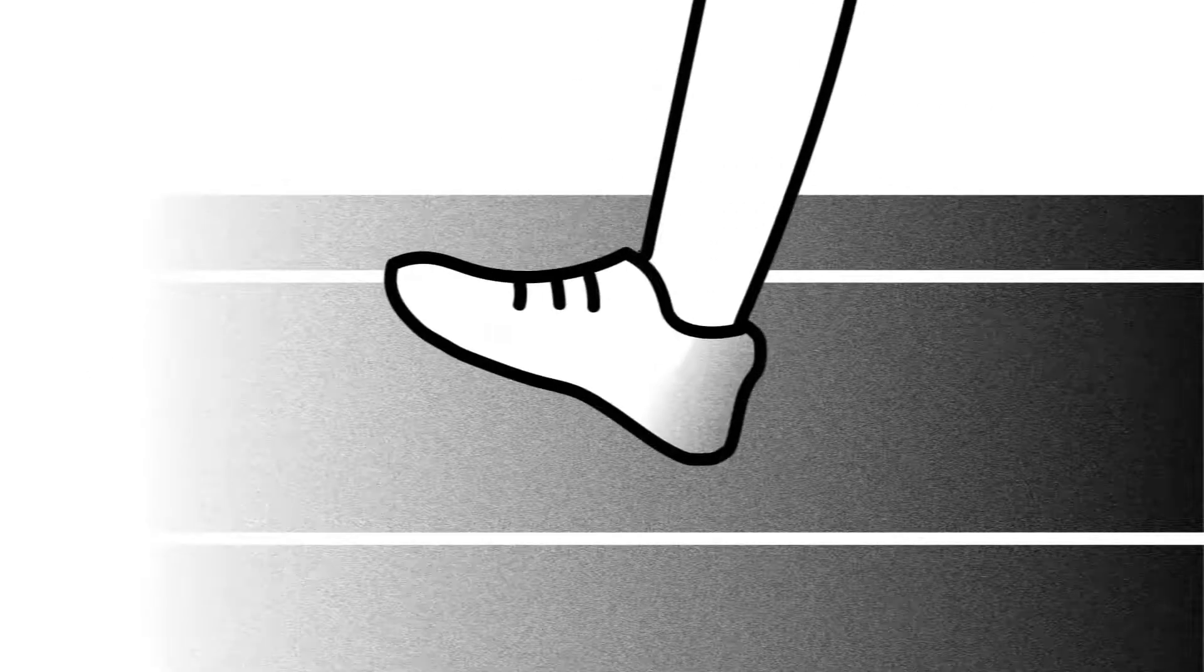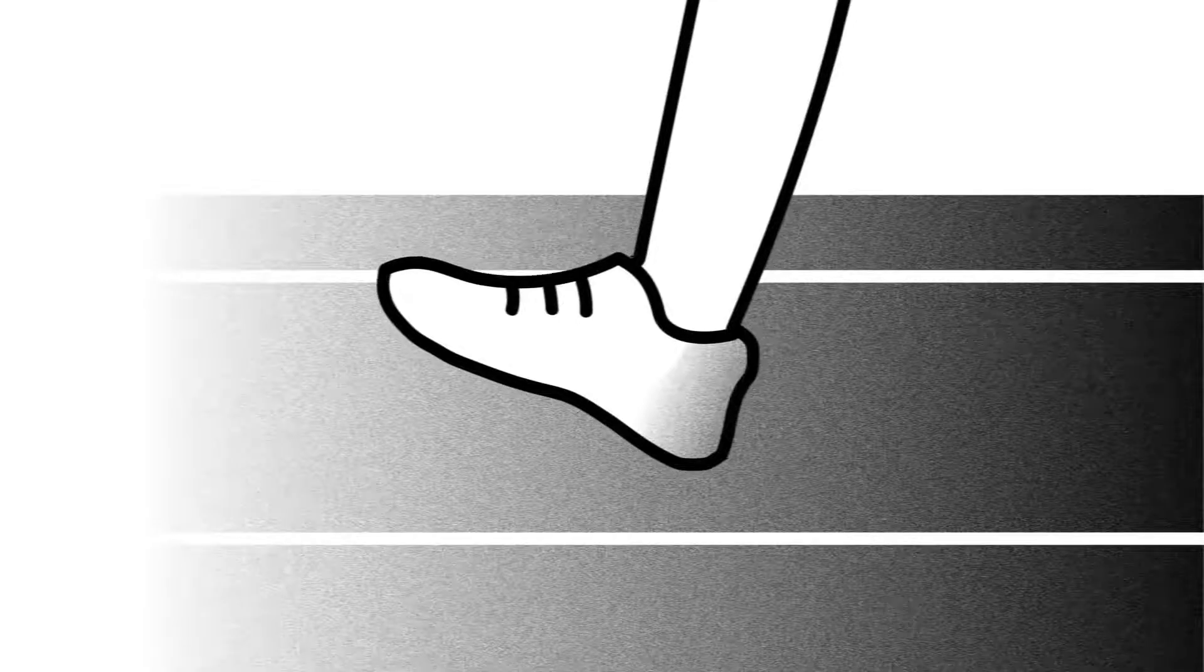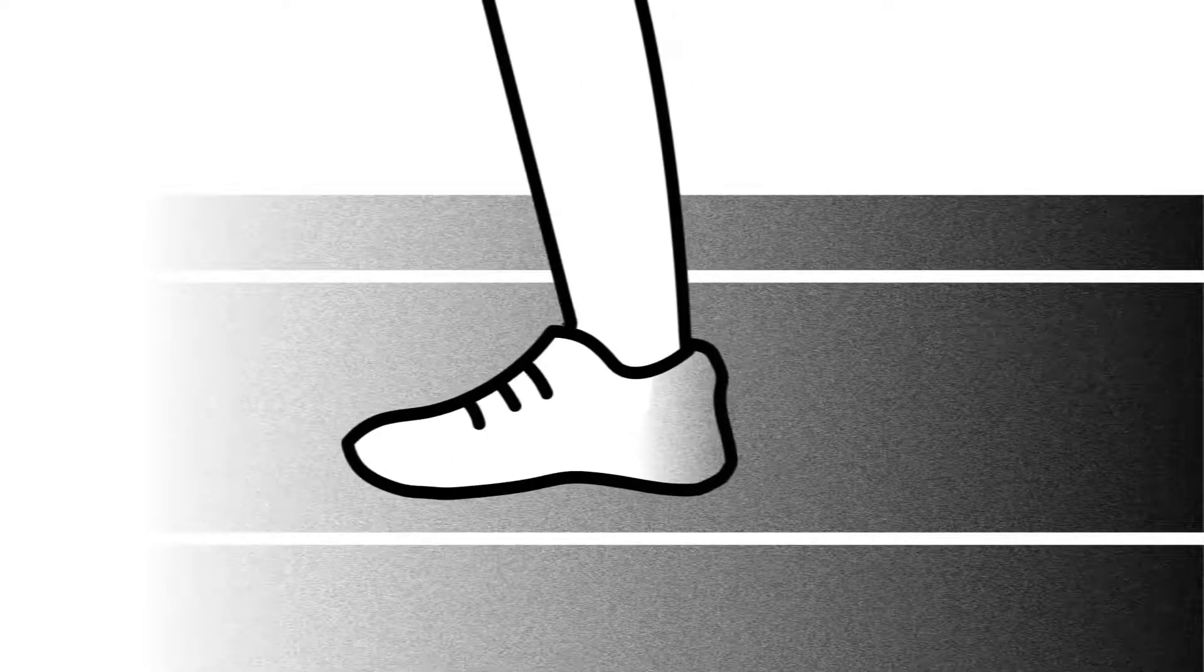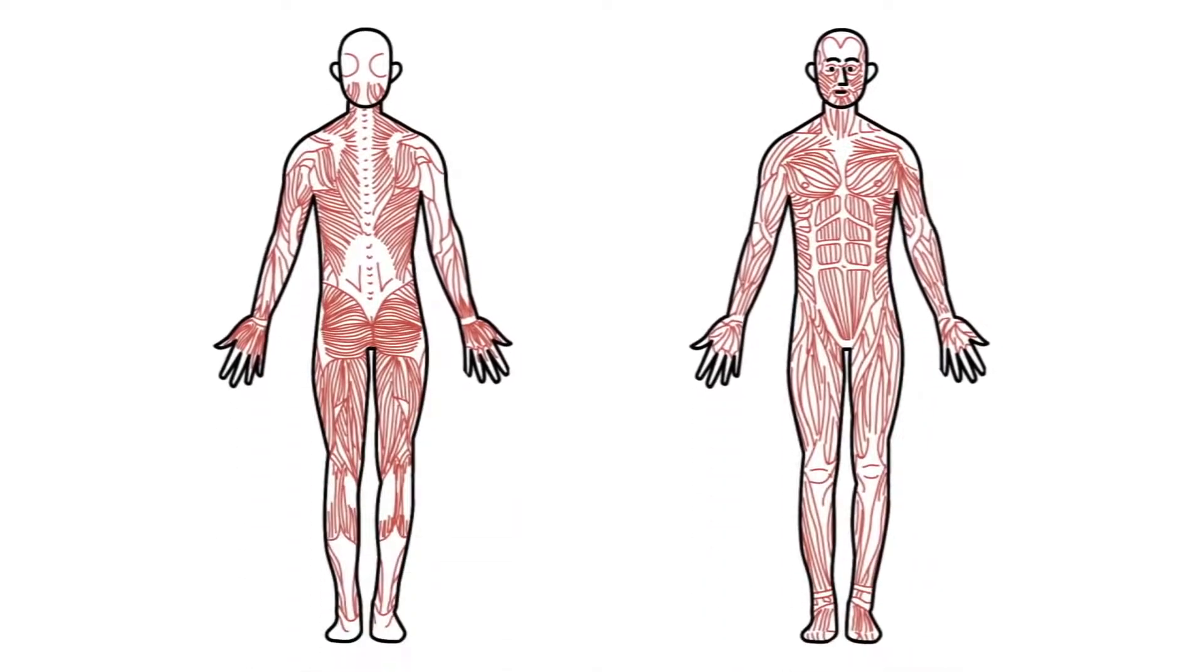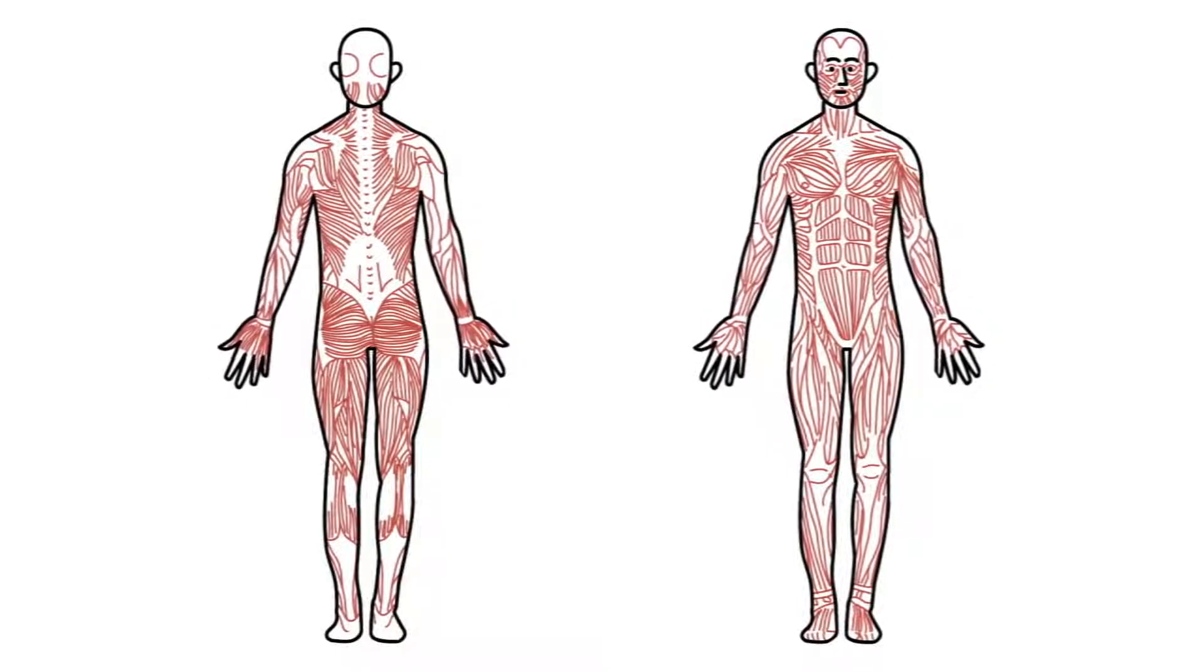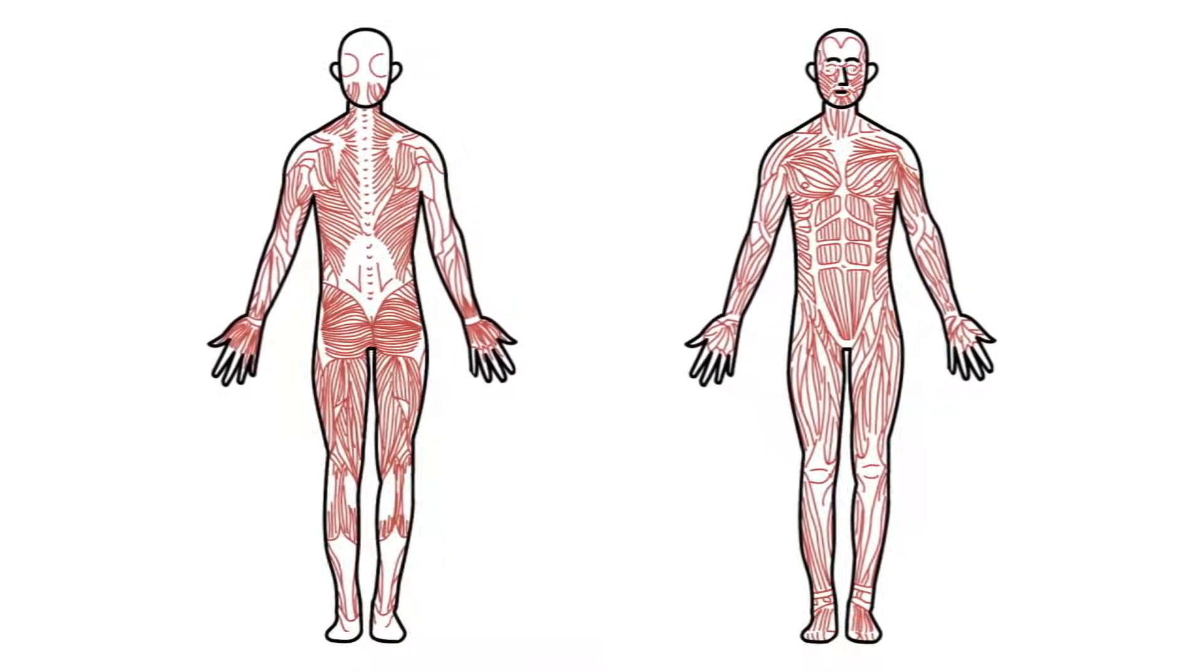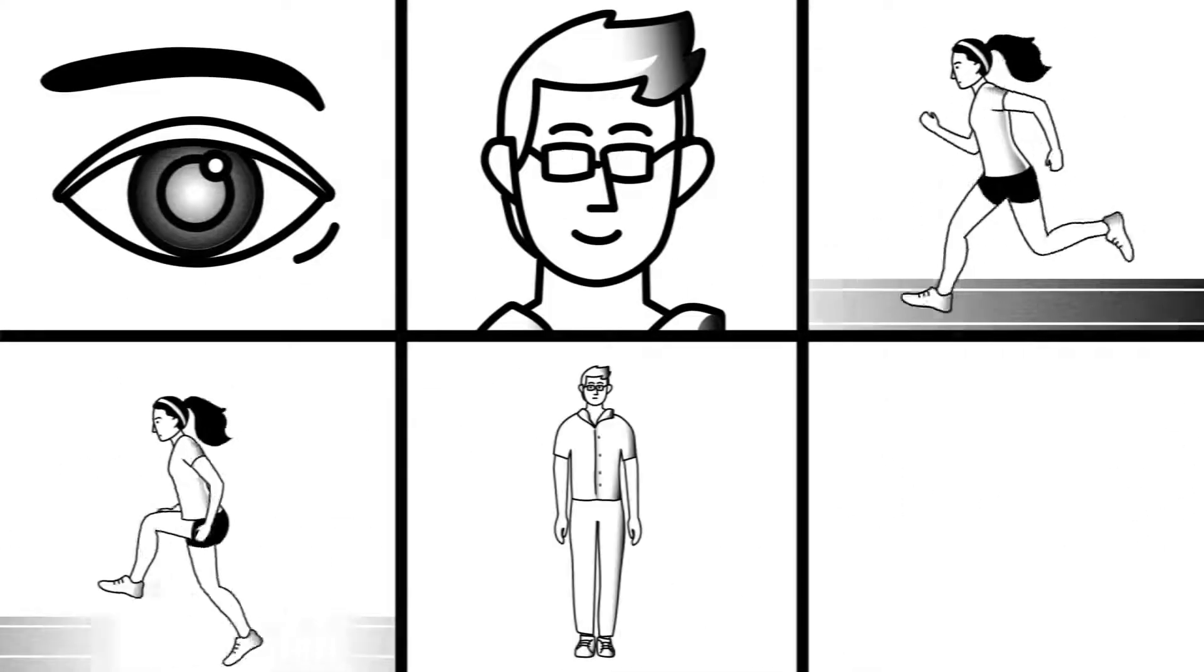Each time you take a step, 200 muscles work in unison to lift your foot, propel it forward, and set it down. It's just one of the many thousands of tasks performed by the muscular system. This network of over 650 muscles covers the body and is the reason we can blink, smile, run, jump, and stand upright.